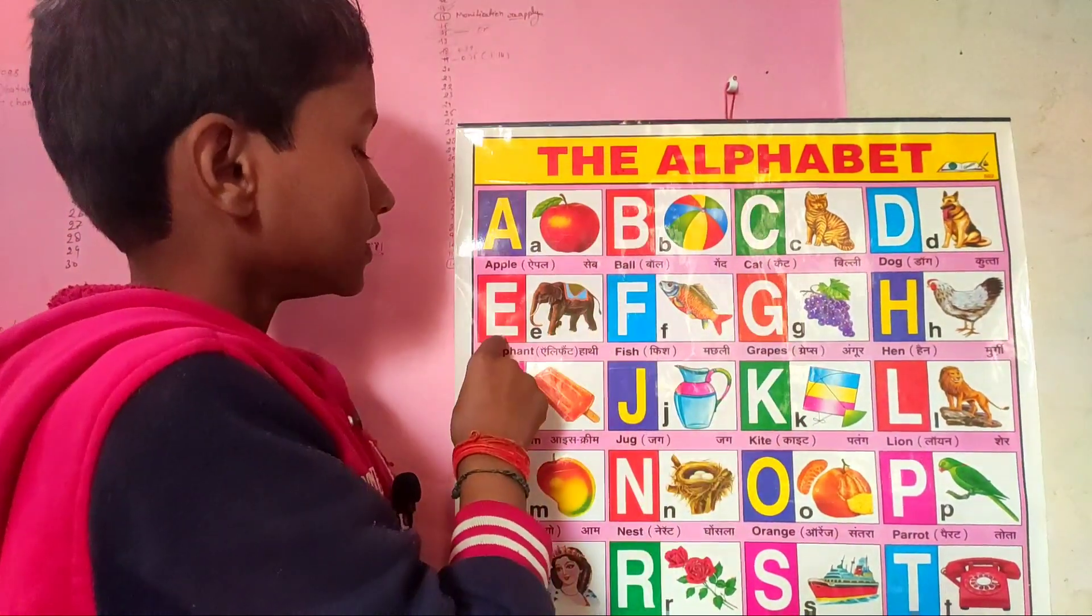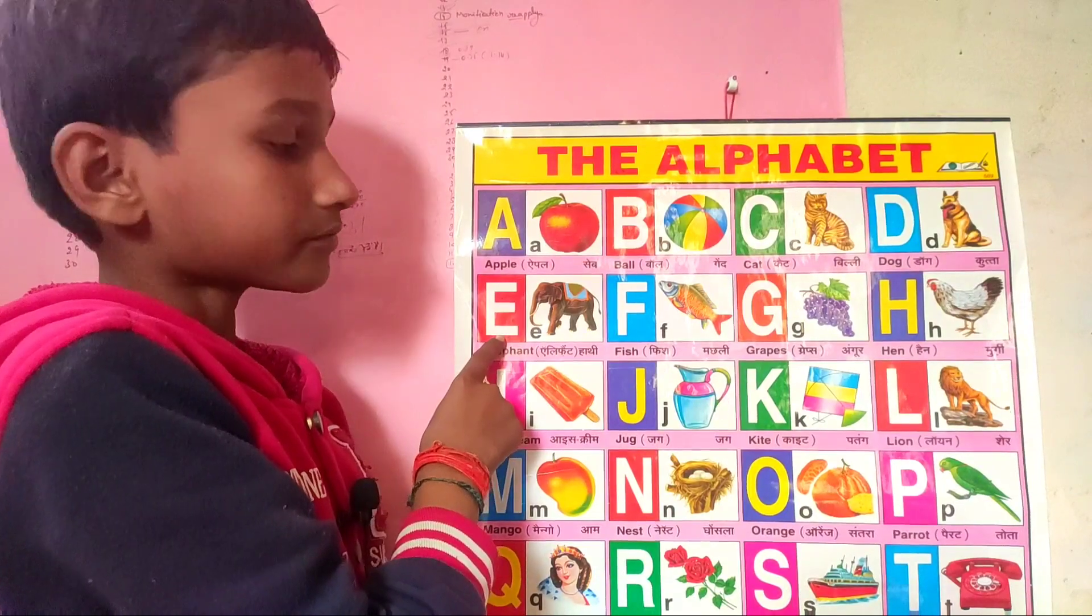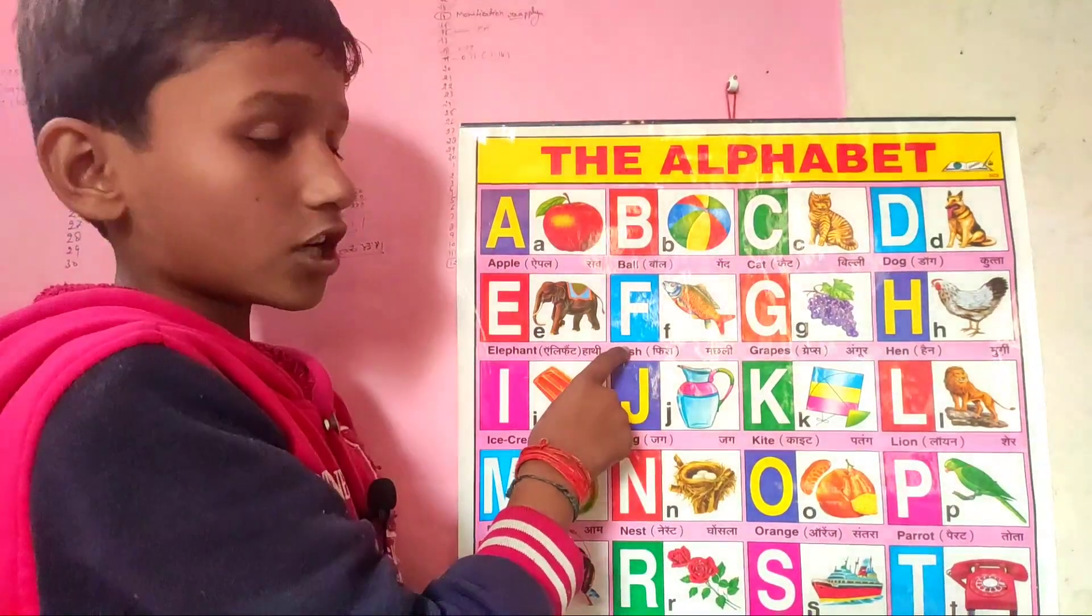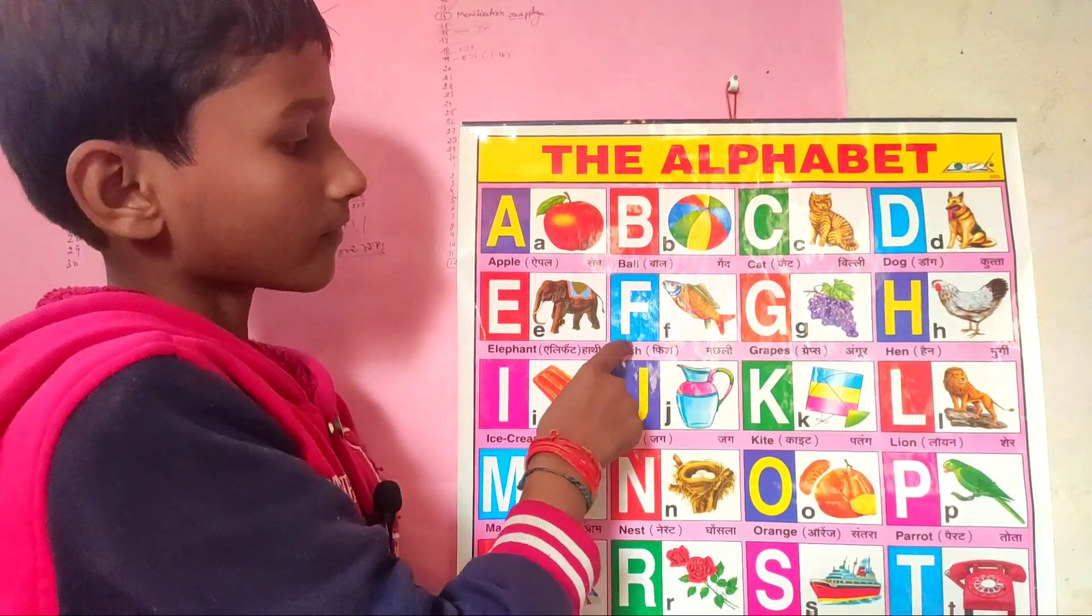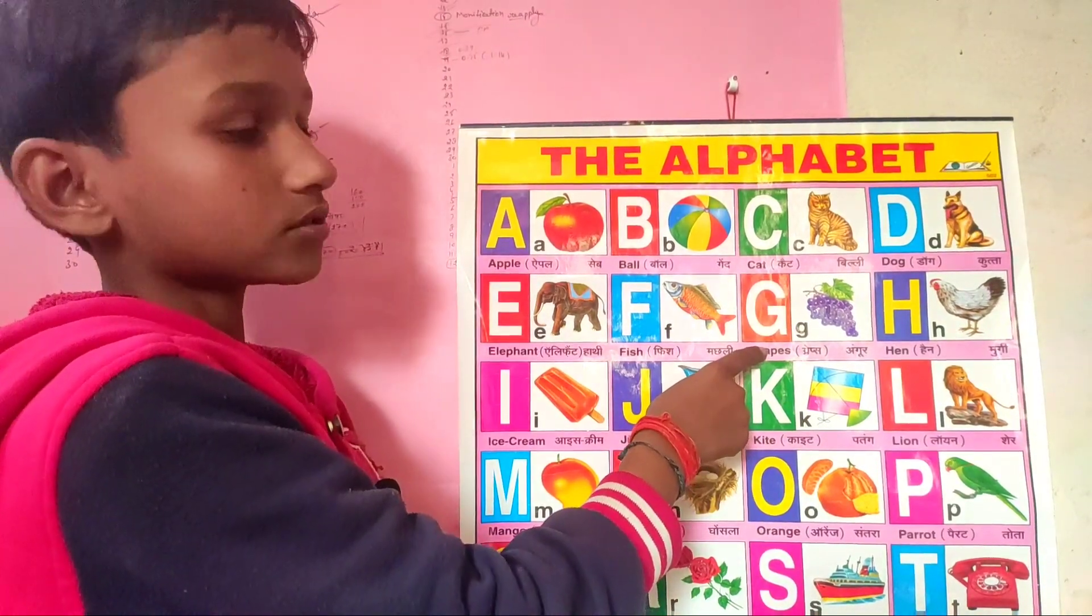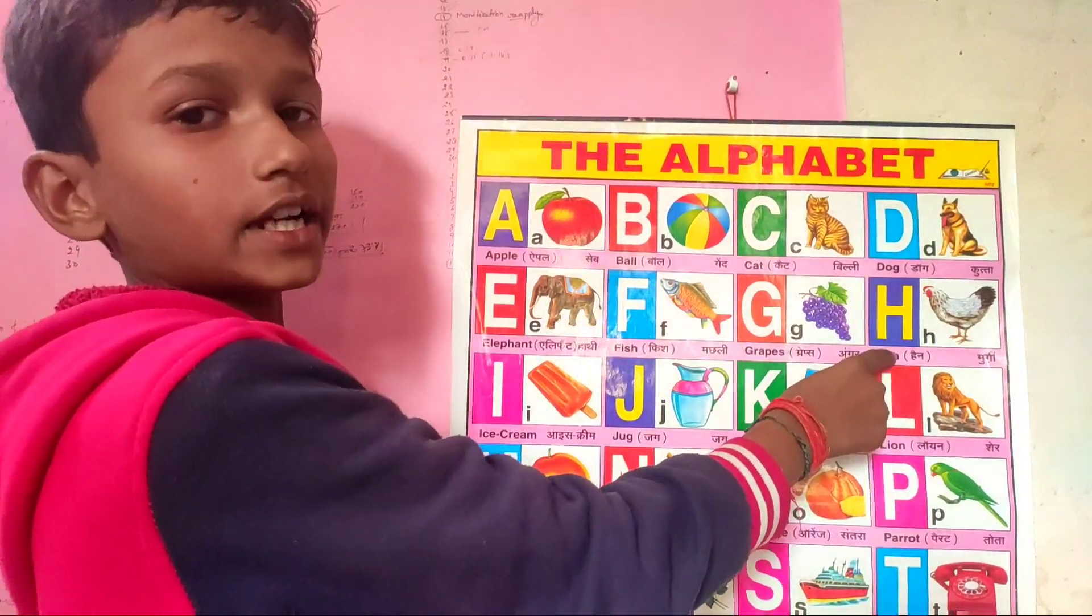E for elephant, F for fish, G for grapes, H for hand.